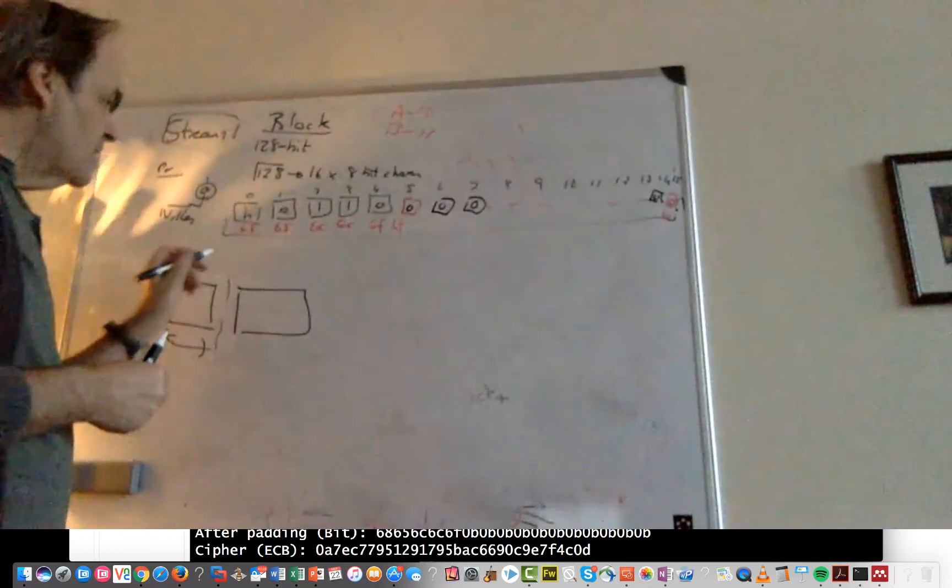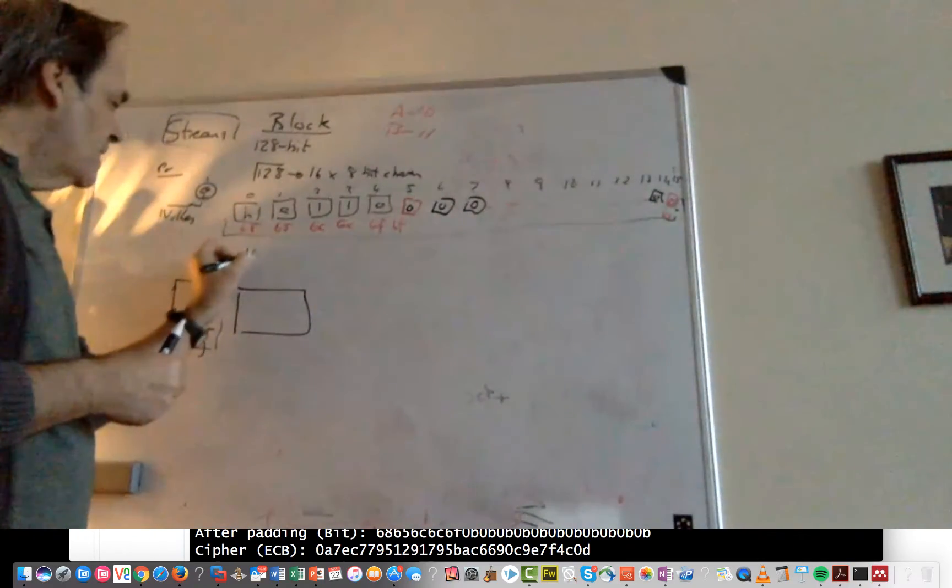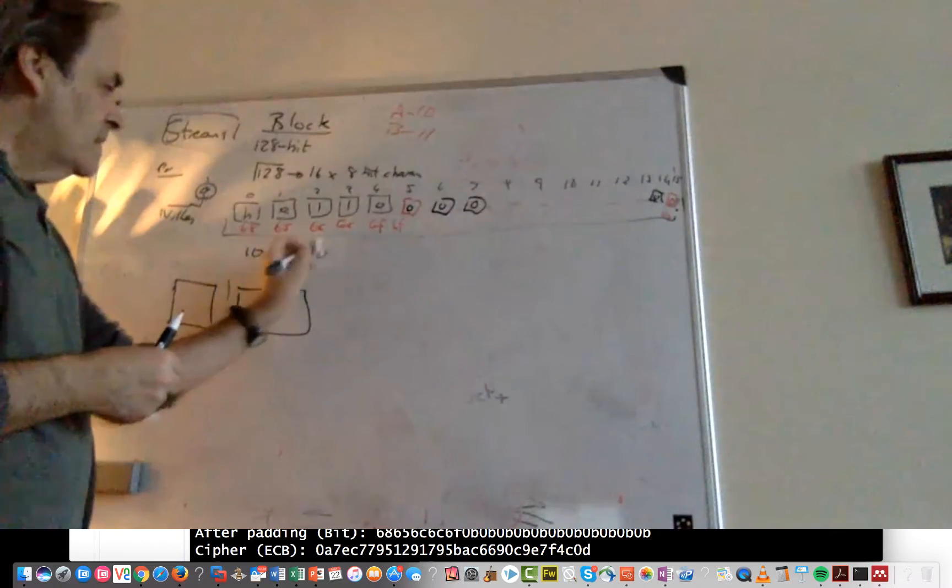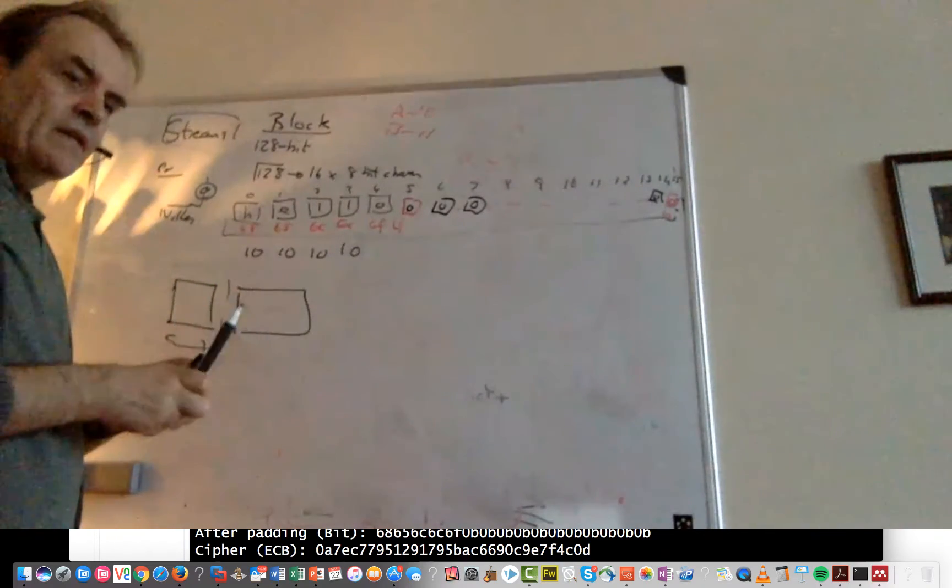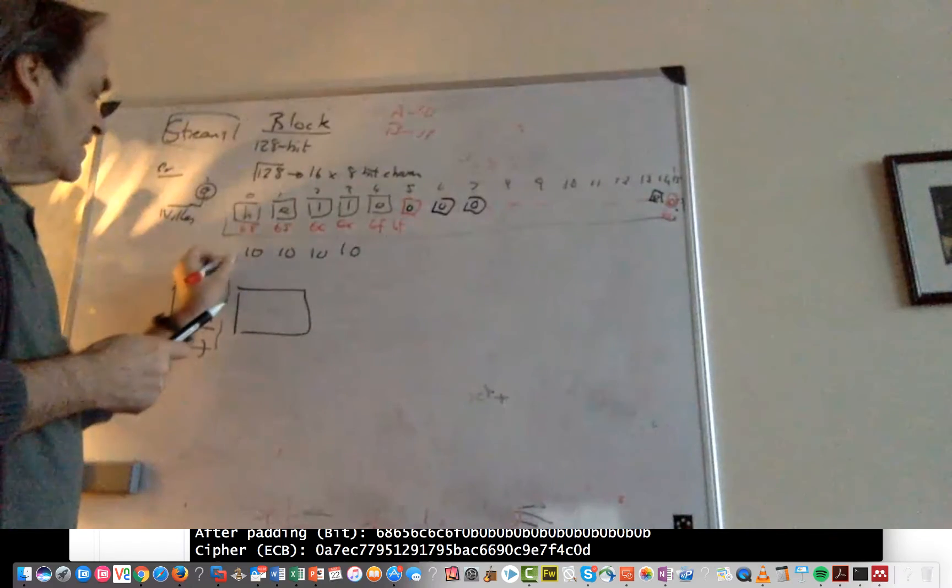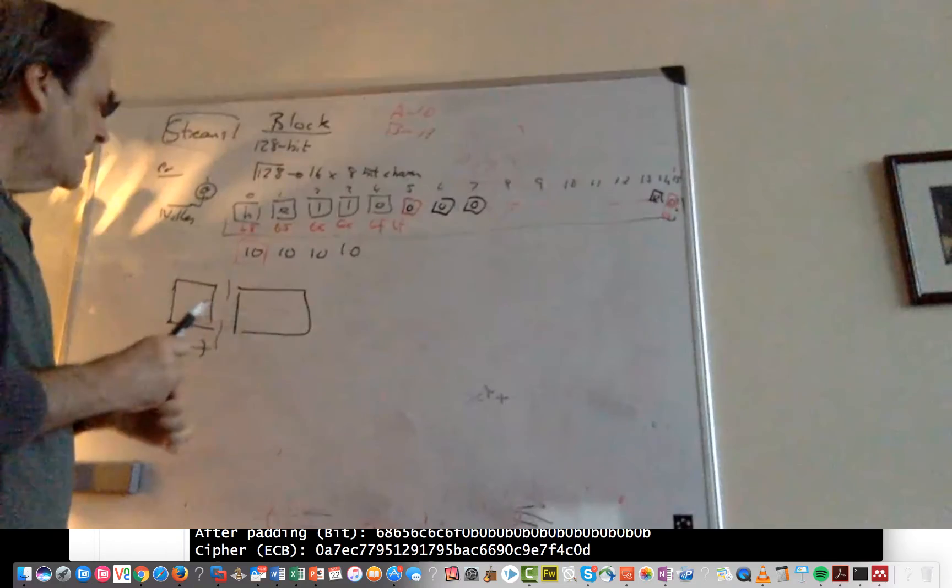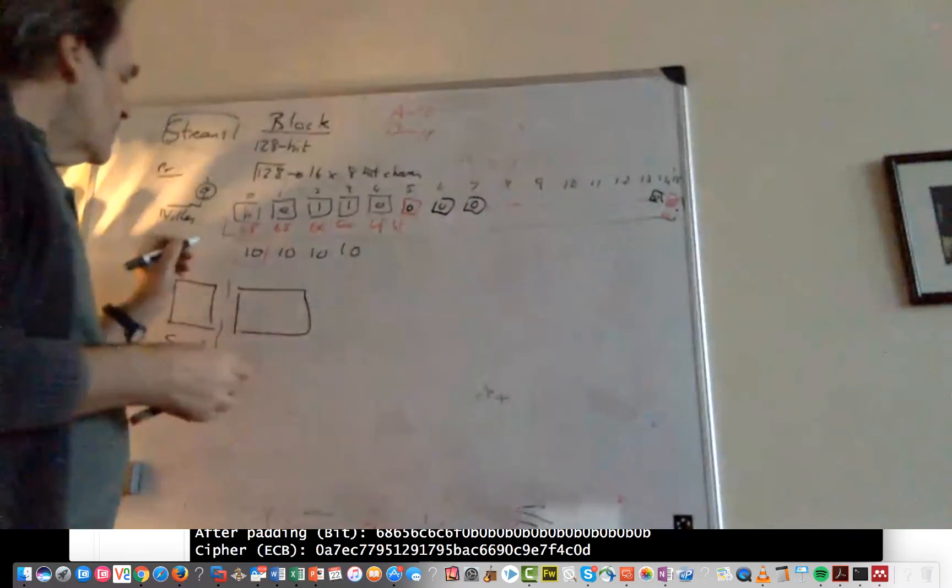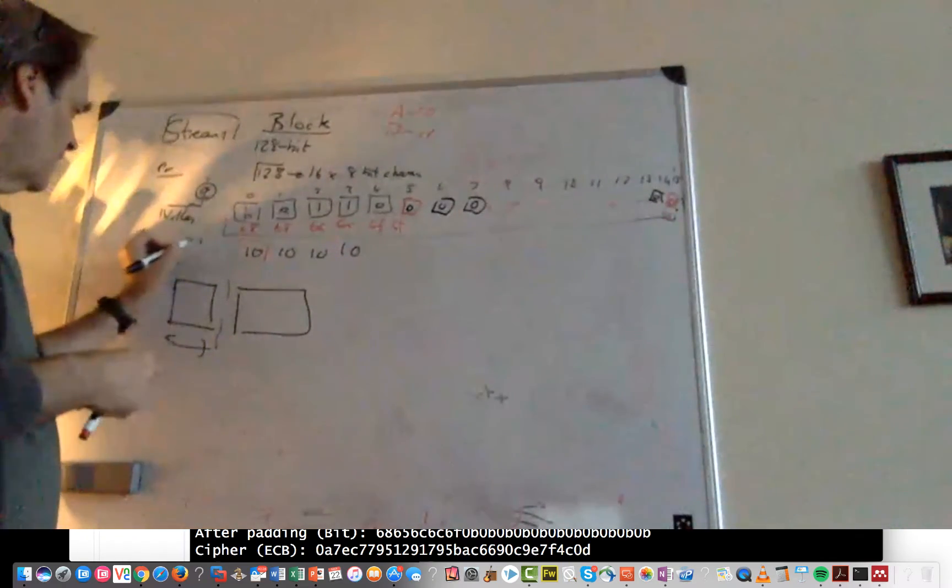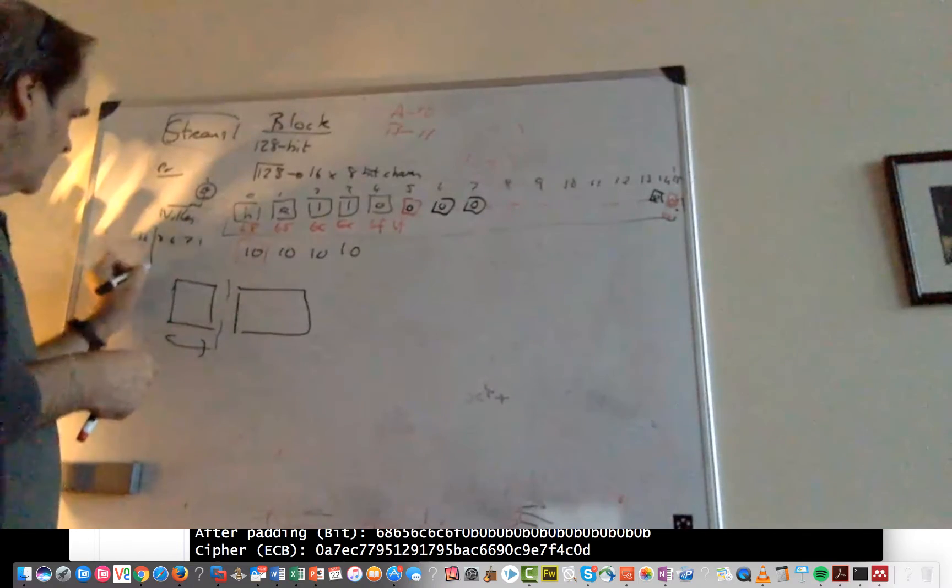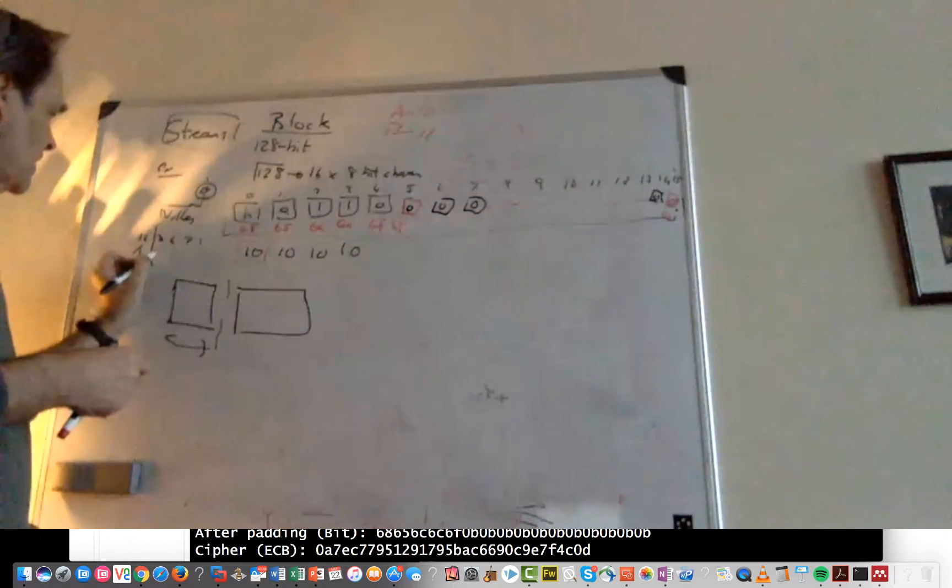So if that happens, if we have 16 characters there then the next block actually becomes 10 and 10 in hex is 16. 16 because we have 1, 2, 4, 8, 16. Each character is 4 bits so 10 is actually 16.